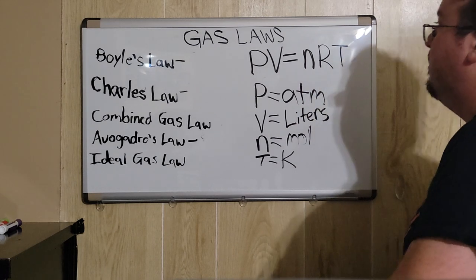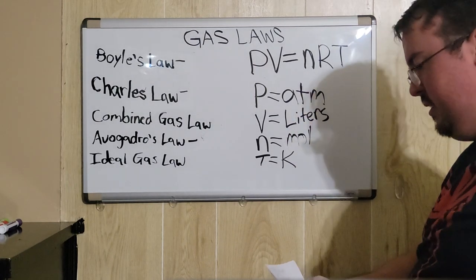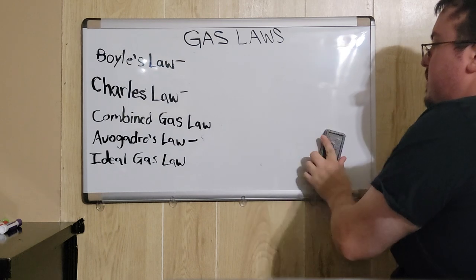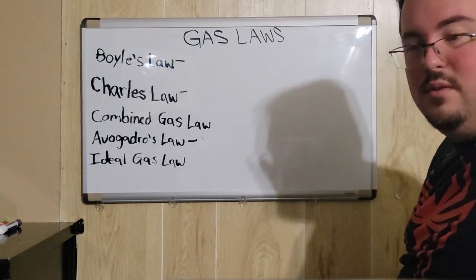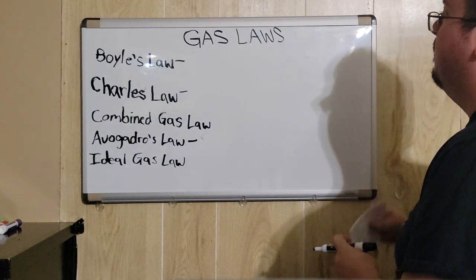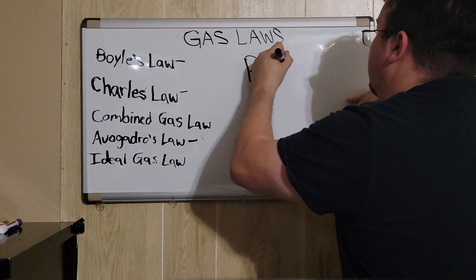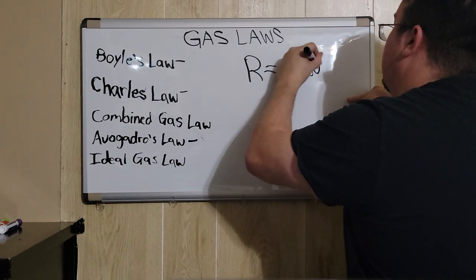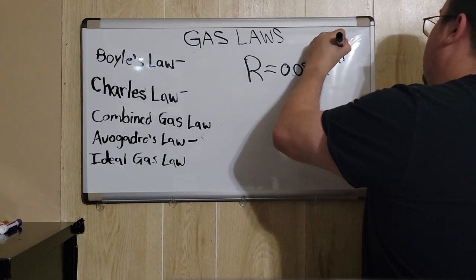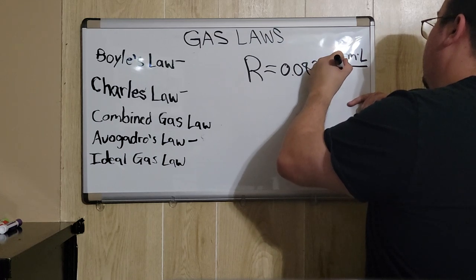What's left now, which we haven't covered yet, is R. R is what's known as a constant. Whenever you have all of these units available, you can use this constant for the ideal gas formula. R equals 0.0821, and the units are going to be ATM times liter over Kelvin times mole.